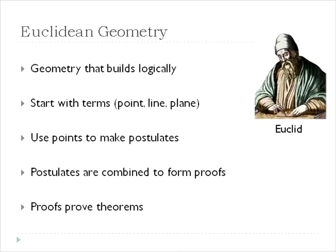Now, if you feel some pain as you go through proofs or you start feeling like, wow, this is a little bit tough, this is the man that you can blame. This is Mr. Euclid. And we call Euclidean geometry geometry that builds logically. It starts with terms like points and lines and planes. And we use those definitions to make postulates. And we use those postulates to combine together and form a proof. And the proofs prove theorems are true. So it's just a logical order of events like a sequence.